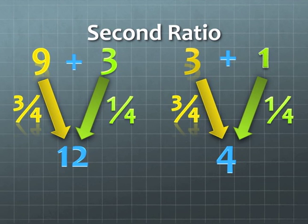3 and 1, 3 is 3-4ths of 4, the sum, and 1 is 1-4th of 4.